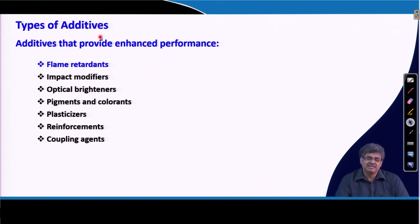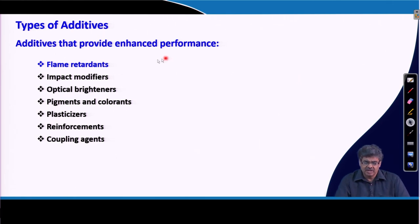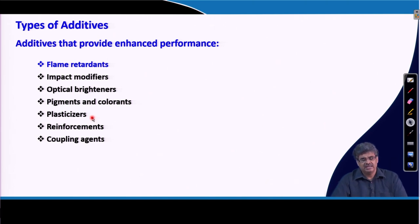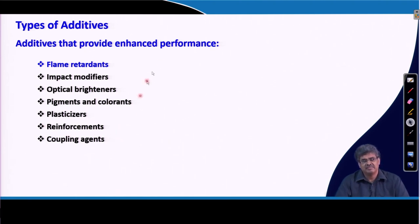Now, moving to other types of additives which enhance performance. Flame retardants improve flame performance, reducing flammability of a polymer. Impact modifiers increase impact resistance, optical brighteners increase brightness, pigments and colorants are added for aesthetics. Plasticizers are added to decrease Tg and increase ease of processing. Reinforcements and coupling reagents can also be added to improve base polymer performance.